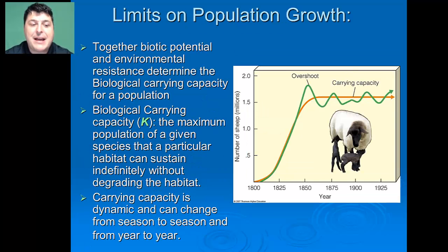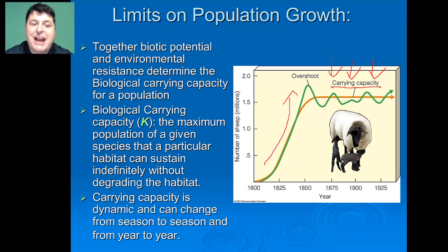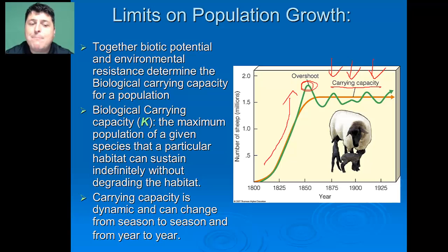Together, the biotic potential and the environmental resistance are used to establish the carrying capacity for a population. The biological carrying capacity is the maximum population of a species that a habitat can sustain indefinitely without degrading that habitat. You might reach a maximum number in an area, but if that number can't be sustained without degrading the habitat, that's not the carrying capacity. Most populations hover at or around the carrying capacity, which represents the average number of individuals that can be sustained in a particular area.